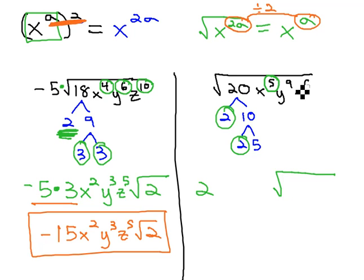Next, we have x to the 5th. When we divide 5 by 2, we get 2 with a remainder of 1. That means 2 come out and 1 remains inside the radical. We'll say x to the 1st. Similarly, the 9 divided by 2 is 4 remainder 1. So, we've got y to the 4th with 1y remaining inside.